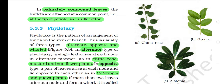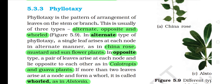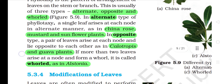In palmately compound leaves, the leaflets are attached at a common point, that is at the tip of the petiole, as in silk cotton. 5.3.3 Phyllotaxy. Phyllotaxy is the pattern of arrangement of leaves on the stem or branch. This is usually of three types: alternate, opposite and whorled. In alternate type, a single leaf arises at each node in alternate manner as in china rose, mustard and sunflower. In opposite type, a pair of leaves arise at each node and lie opposite to each other, as in Calotropis and guava. If more than two leaves arise at a node and form a whorl, it is called whorled, as in Alstonia.